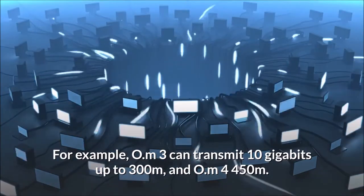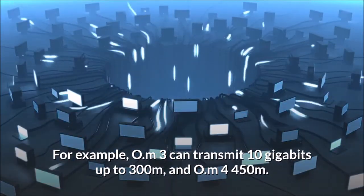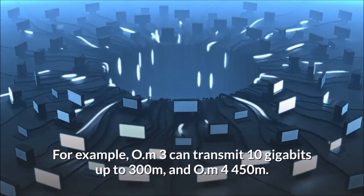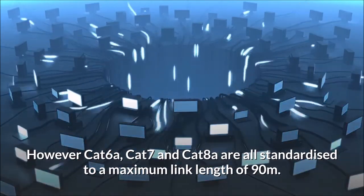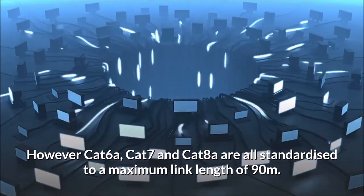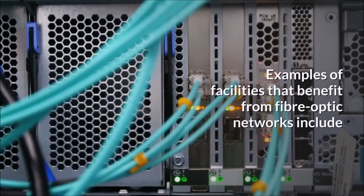For example, OM3 can transmit 10 gigabits up to 300 meters, and OM4 450 meters. However, Cat 6a, Cat 7 and Cat 8a are all standardized to a maximum link length of 90 meters.